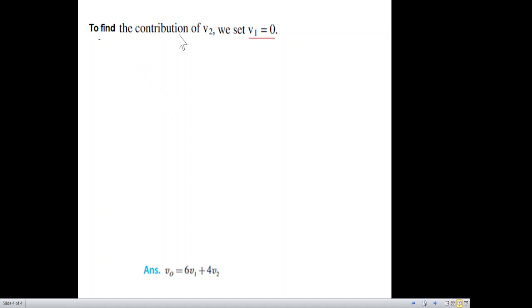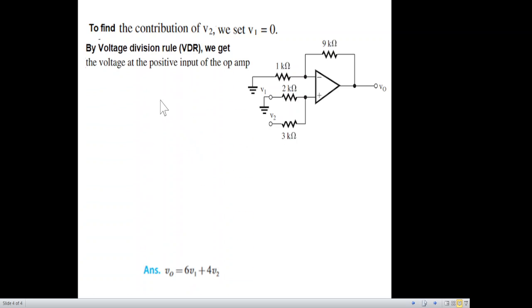Now to find the contribution of v2, we set v1 as 0. So now we are setting v1 as 0 and this is now working. We'll follow exactly the same technique by VDR. Now we are going from here like this.